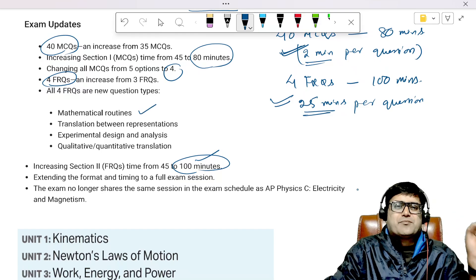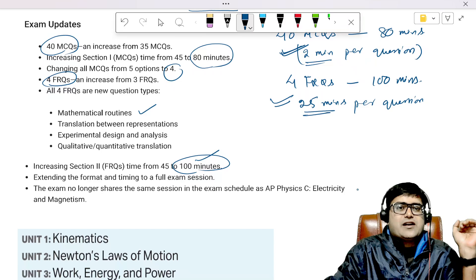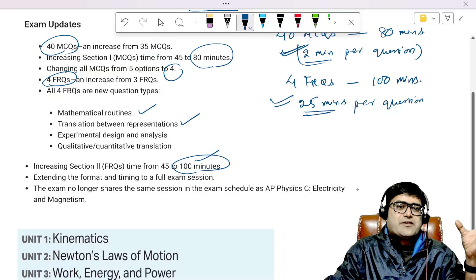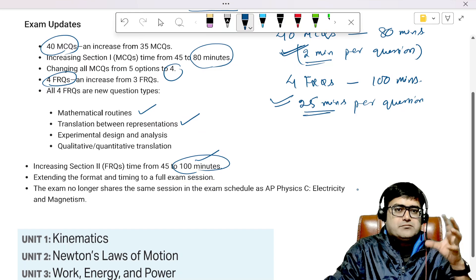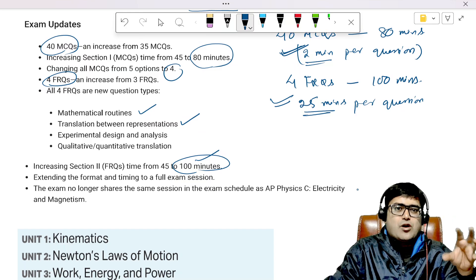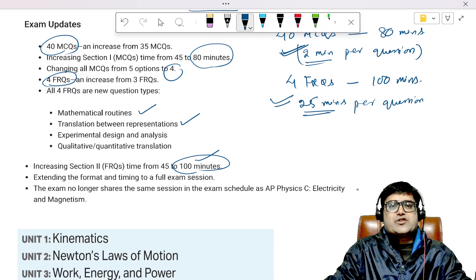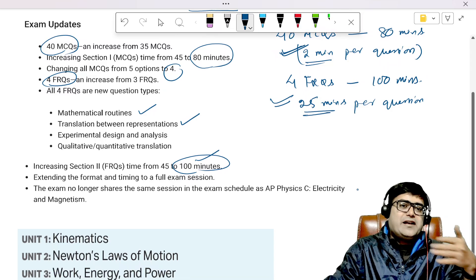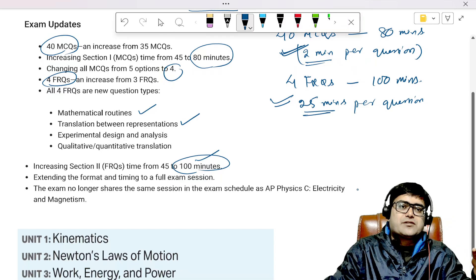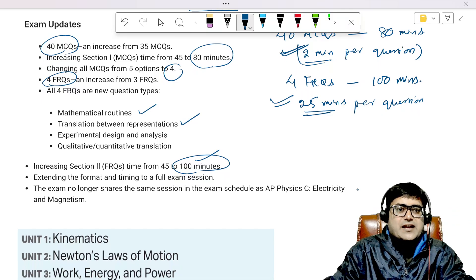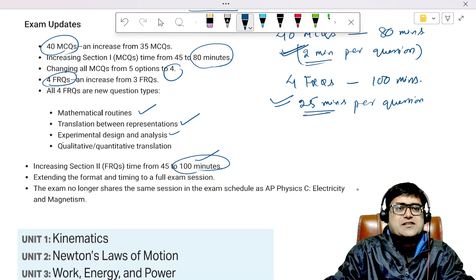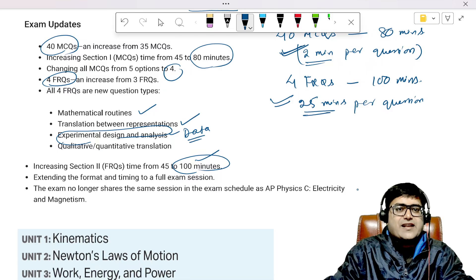The types of questions, apart from the previous types of questions, you have now additional four types. Mathematical routines, so basically simple formula-based questions. Translation between representations, so basically a situation will be given how you represent that using scientific diagrams or expressions. Sometimes a situation will be given to you and you will have to write a proper differential equation. It's a calculus-based course so you will have differentiation to deal with. Now, experimental design analysis, so basically you will be dealing with the data.